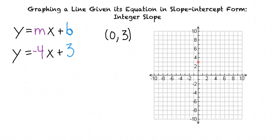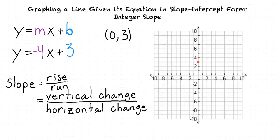Now we can use the slope to find another point on the line. The slope of the line is defined as the rise of the line over the run of the line or the vertical change over horizontal change. We know that since m equals negative 4, our slope is negative 4, which is the same as negative 4 over 1. This means that every time our line changes vertically by negative 4, it will change horizontally by 1.